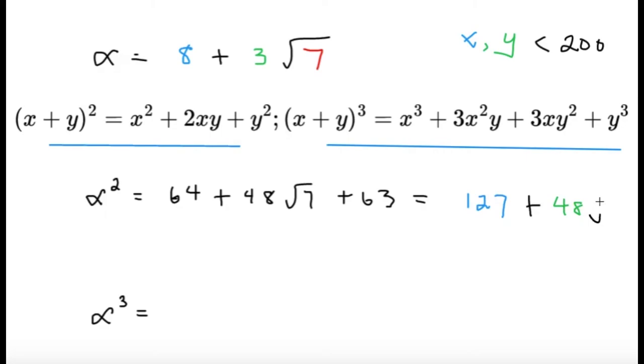And then, for alpha cubed, we can try to simplify. x cubed, that's already equal to 512. And then, for the rest of the terms, we're still going to add something. In fact, the whole part is already greater than 200, which x and y are less than 200. So, we can already conclude that whatever this equals to, this will not be part of the solution, since x and y will already exceed 200.